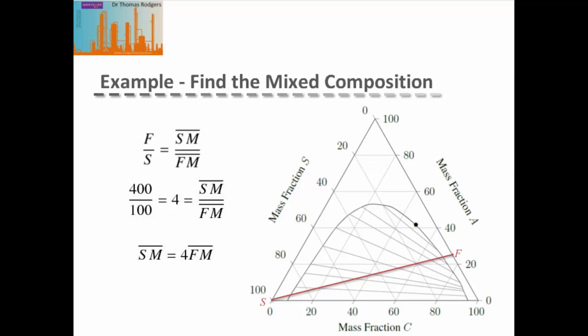We can see from our ternary diagram that we have the length of the line from the solvent to the feed point. We put our scale on this and then draw our mixing point so that the lengths of the lines are in the appropriate ratio for our lever arm rule. We can then read the composition of this mixing point off the diagram: 20% solute A, 60% carrier C, and 20% solvent S.